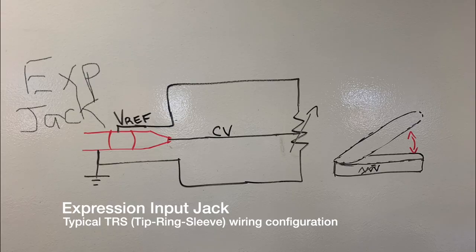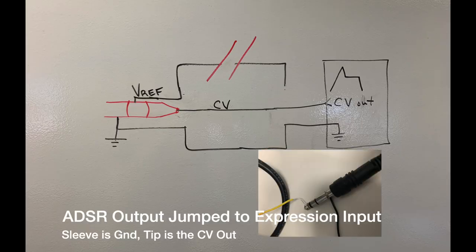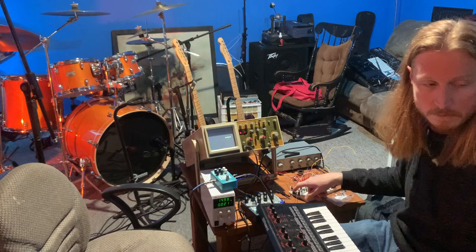These typically work by sending a reference voltage to an expression pedal, which is really a foot-controlled potentiometer, or variable resistor. Resistors act as voltage dividers, so the voltage coming back at the expression input varies depending on the position of the expression pedal. But what if we remove the expression pedal from the equation? Could we use some other voltage source in its place? And this is where the envelope generator comes in, unlocking a whole new area of creative potential.